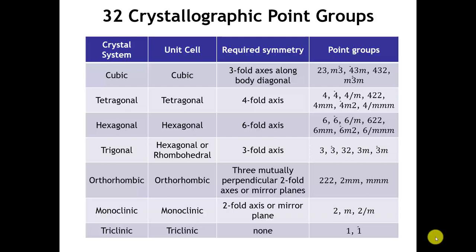Let's start with a reminder of the seven different crystal systems that we encounter in three dimensions. Each of those seven crystal systems has a certain symmetry element that is required — a characteristic element of that crystal system. For example, in the monoclinic, we have to either have a two-fold axis, or a 2-sub-1 screw, or a mirror plane, or glide. Or we could have both, but if we have both, the mirror plane has to be perpendicular to the two-fold rotation axis.